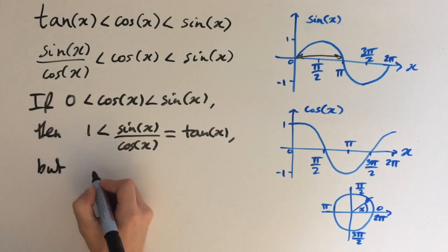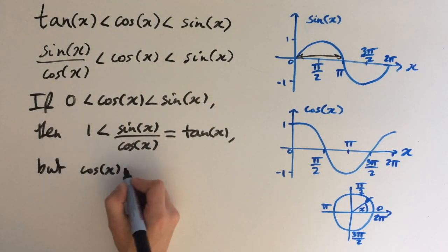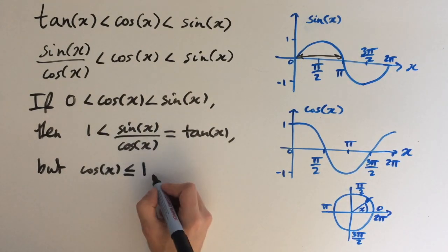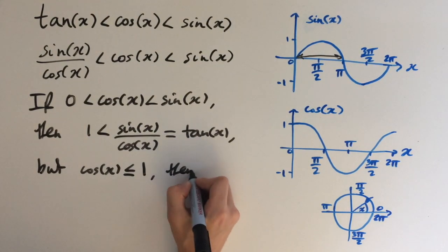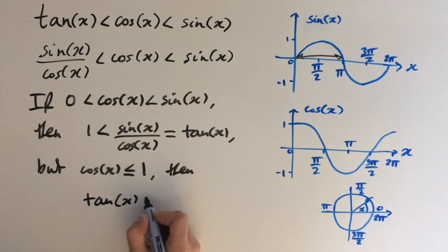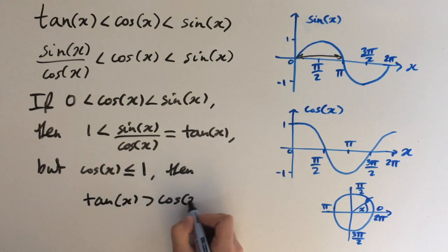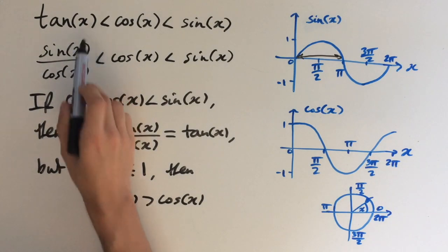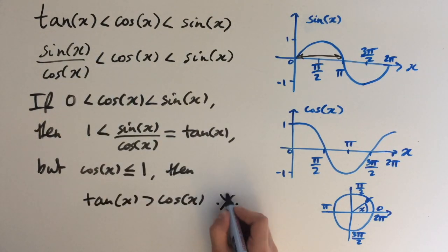But cos(x) is always less than or equal to 1. So then tan(x) > cos(x). But this is another contradiction, so this can't be true.